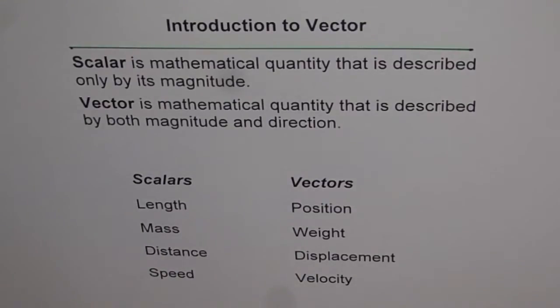Here is the smallest, scalars and vectors. On scalar side we have length, mass, distance and speed. On vectors we have position, weight, displacement and velocity.